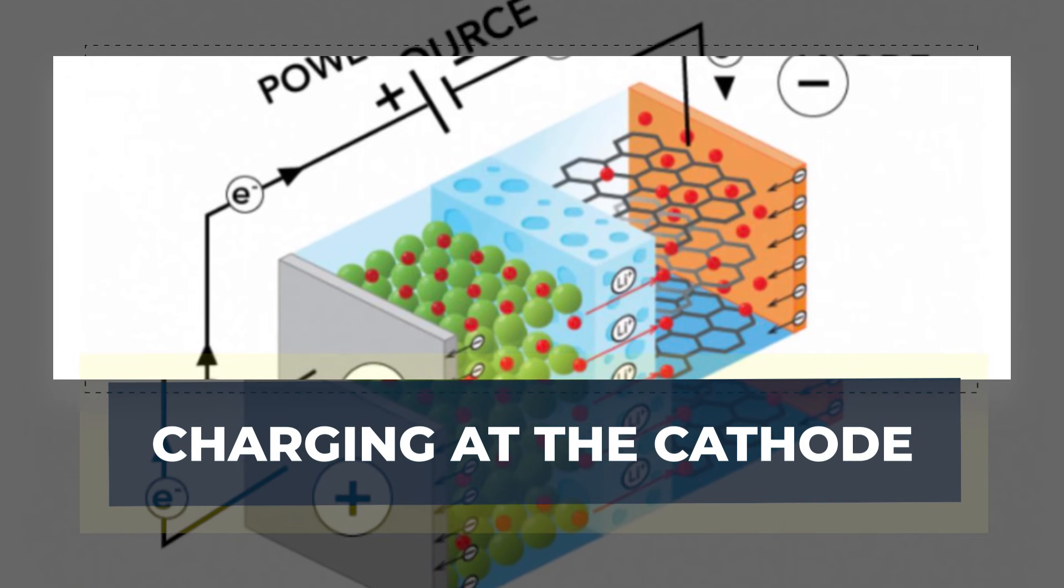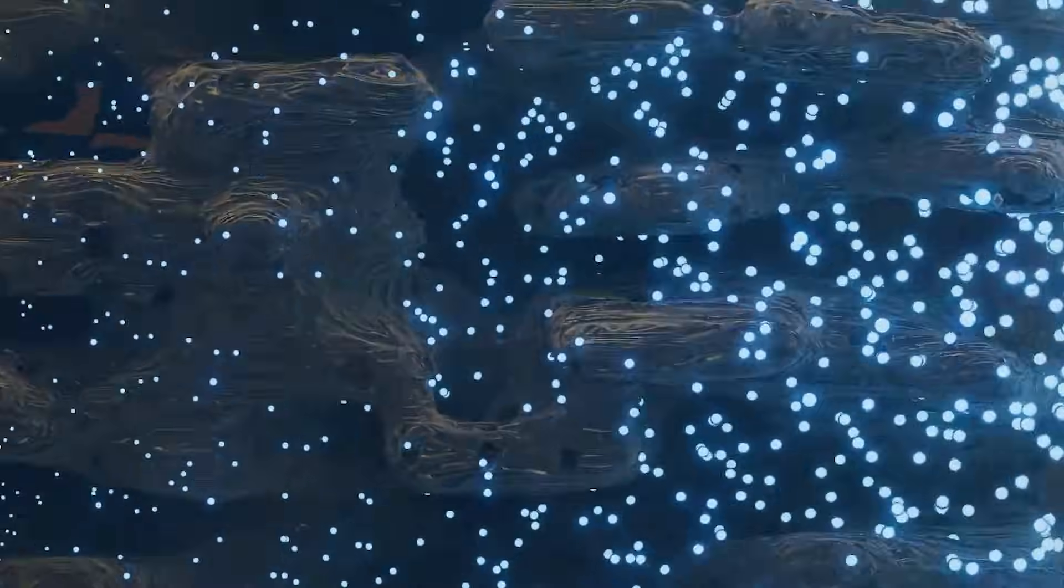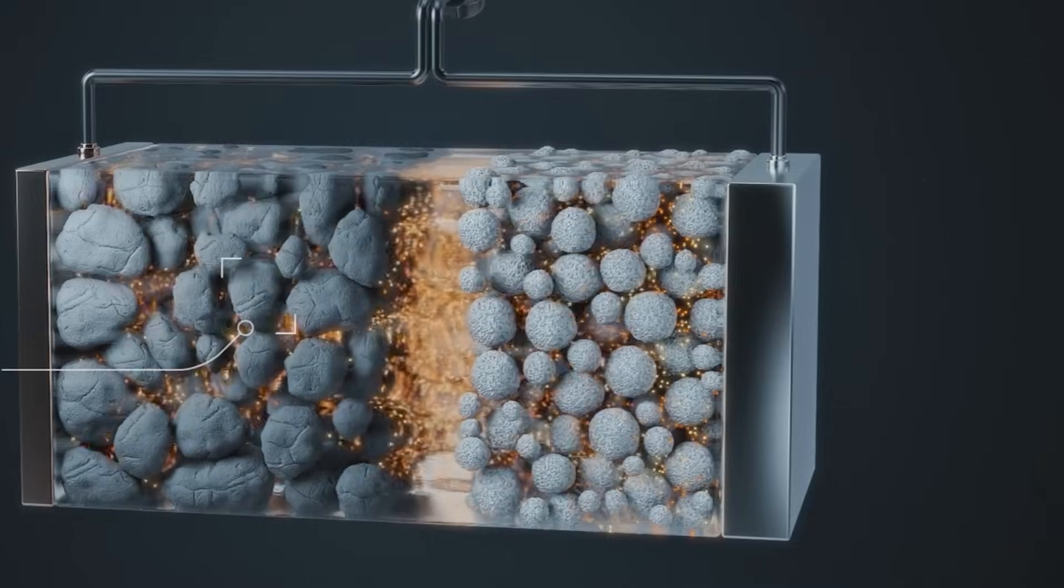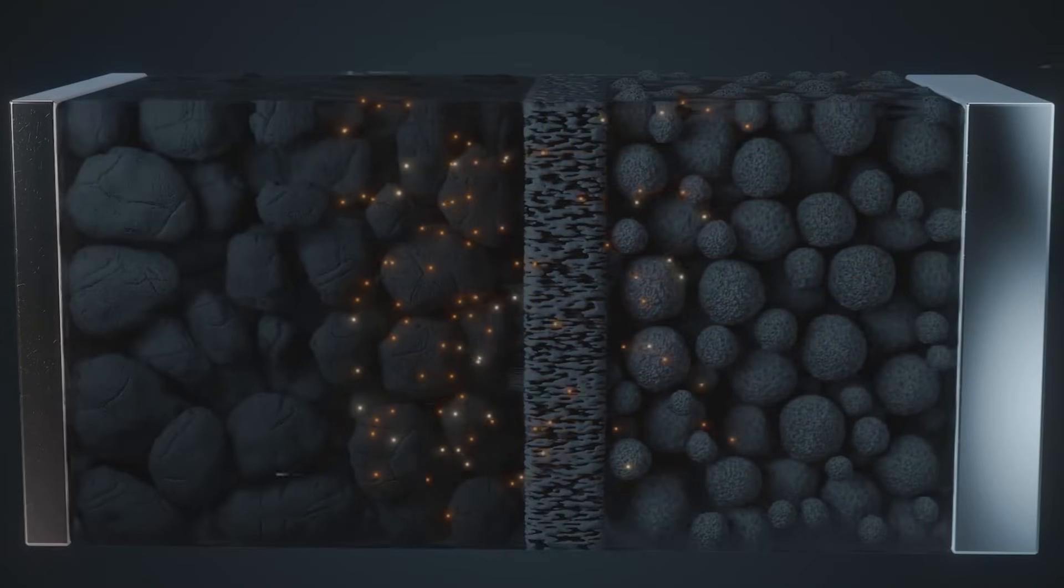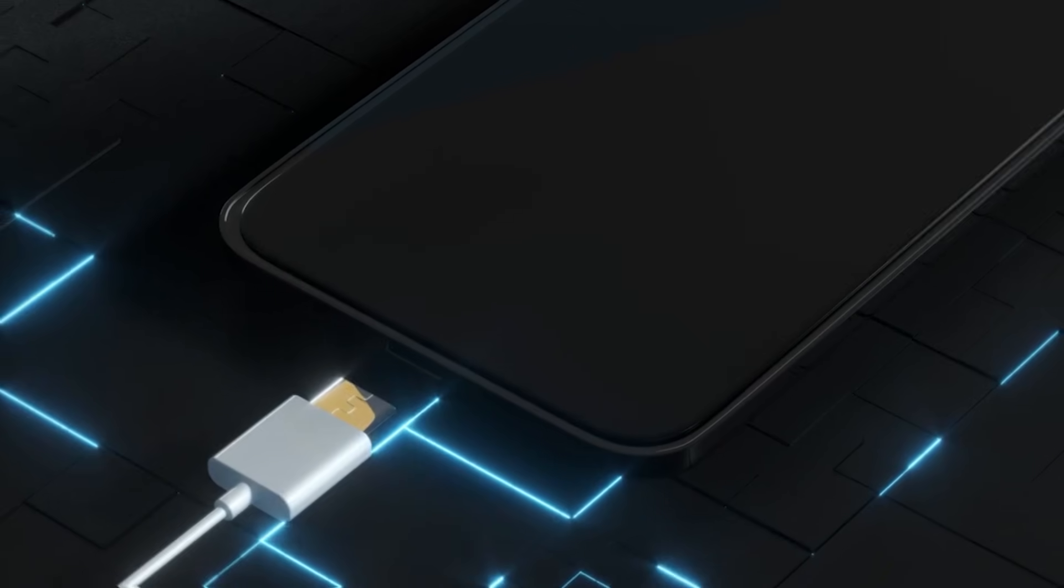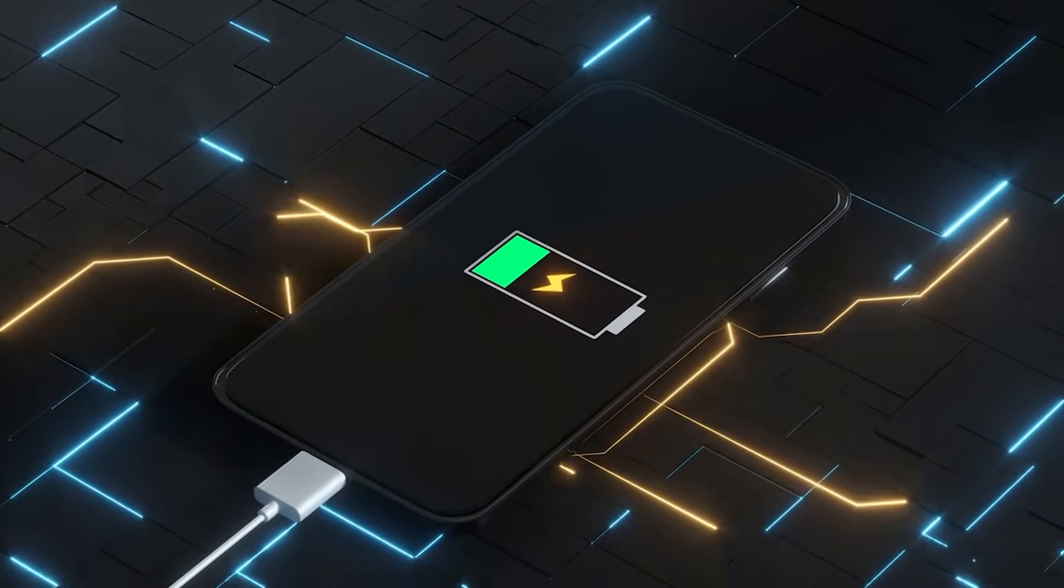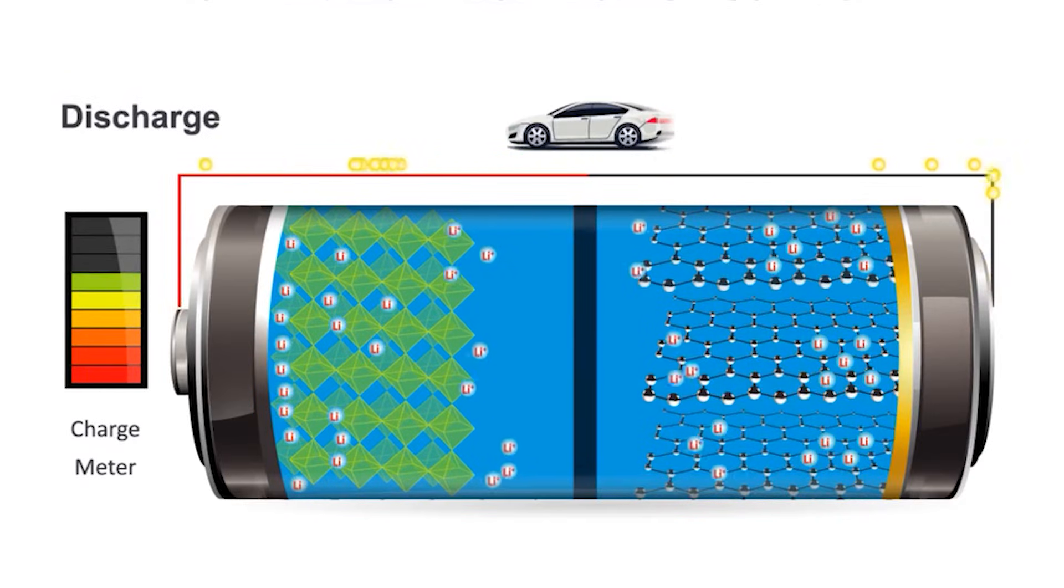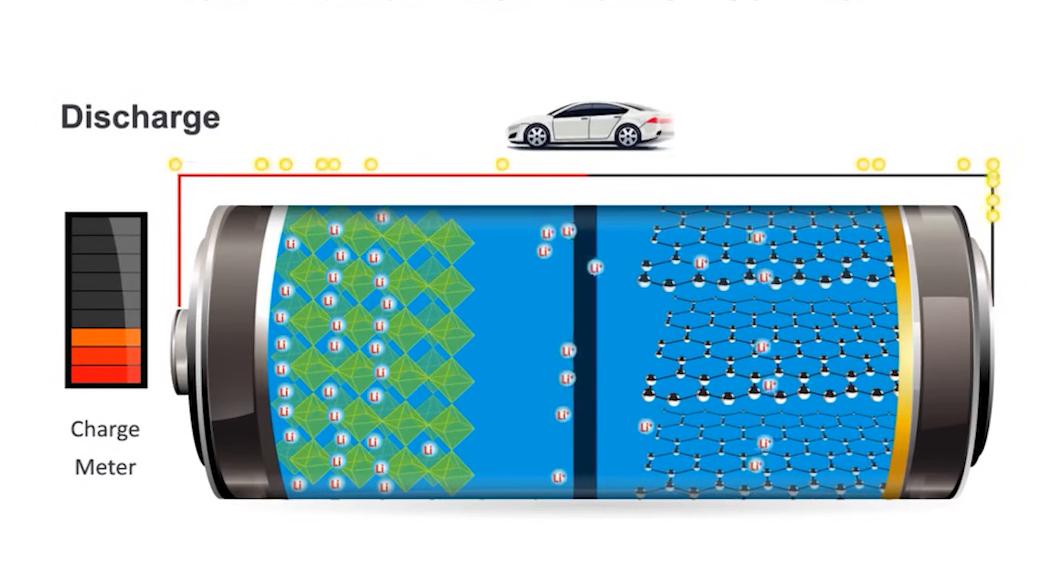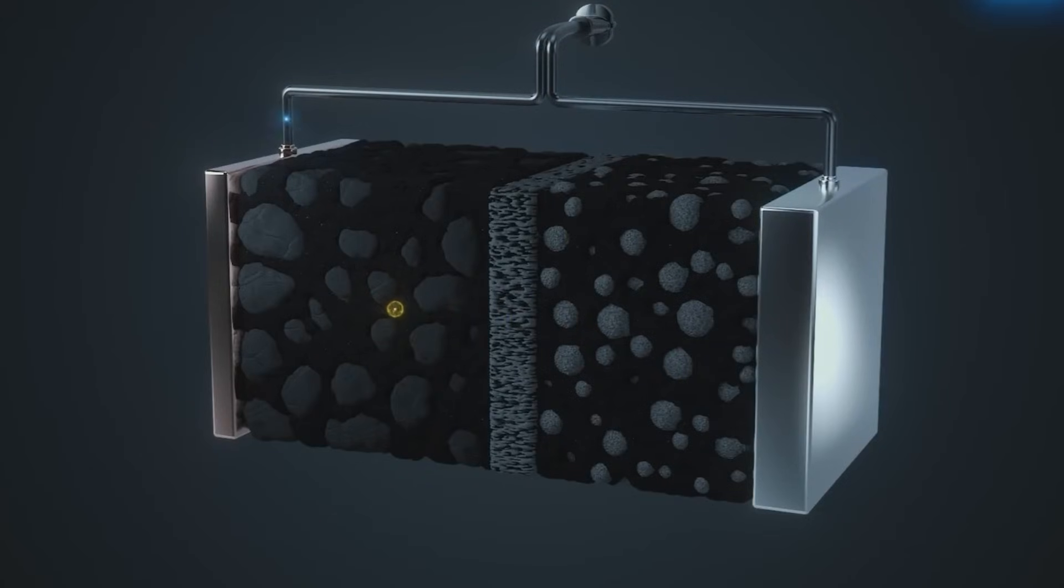Charging at the cathode: In lithium nickel oxide, nickel and oxygen bond strongly. Within that structure, lithium is the easy giver. It can lose an electron and become a positive lithium ion. When you connect a charger, lithium ions are pulled out of the layered cathode crystal and enter the electrolyte. At almost the same moment, electrons are pulled out of the cathode and rush through the conductive network to the current collector, then into the wire.